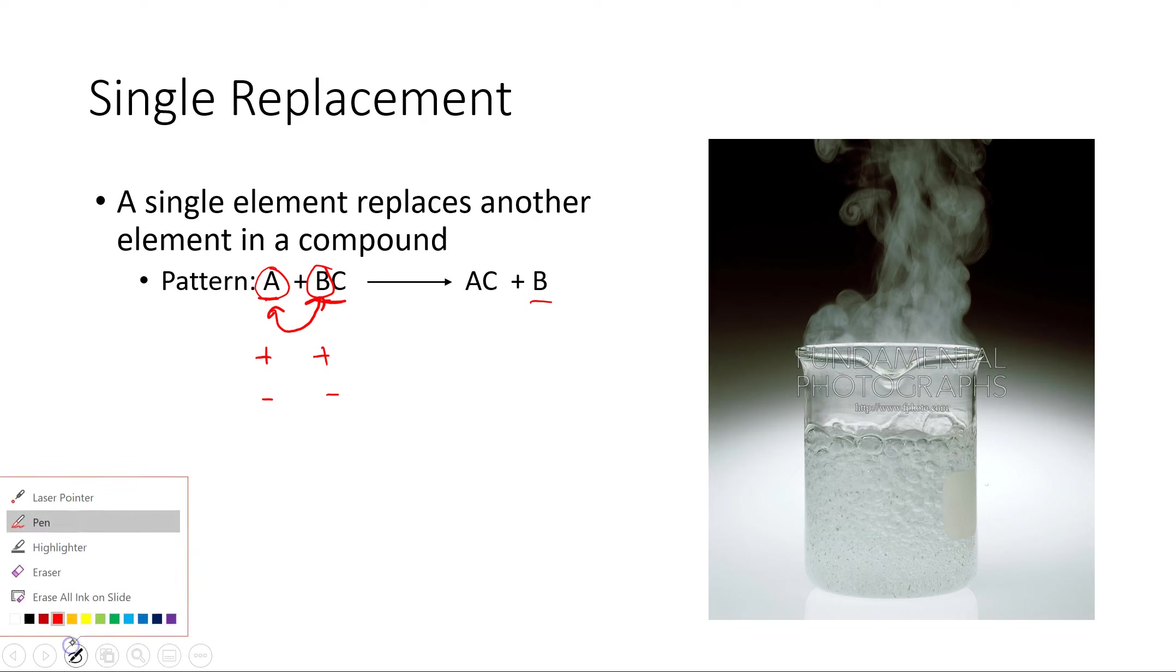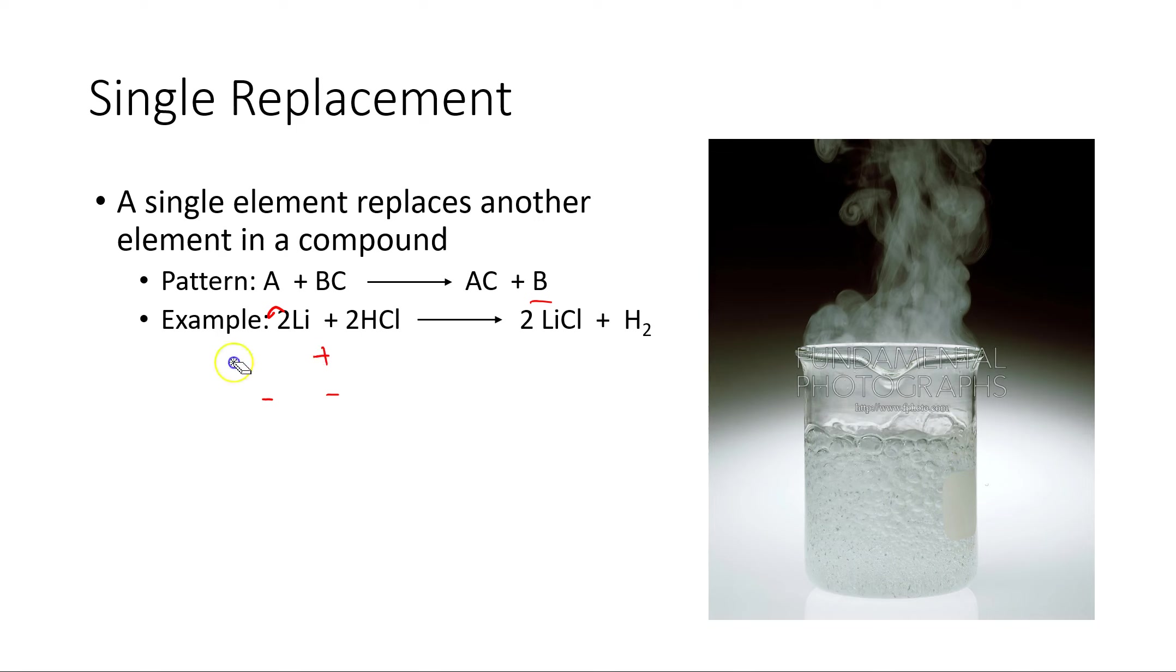So an example of that would be if we put some lithium metal into some hydrochloric acid. The lithium would essentially replace the hydrogen to form lithium chloride and hydrogen gas. And so those bubbles you see in this picture right here, for example, are the indication of the formation of that hydrogen gas. It also produces a little bit of heat, it looks like, so a fairly volatile reaction going on there.